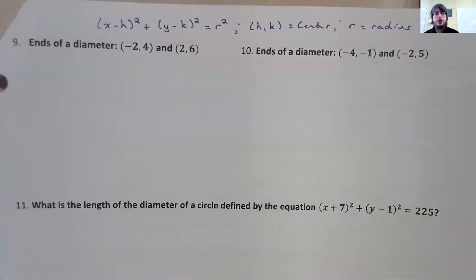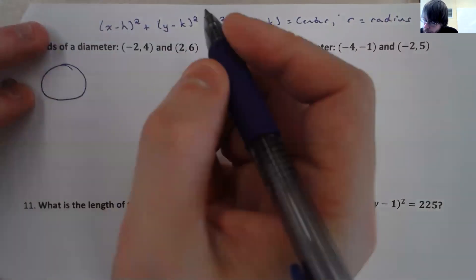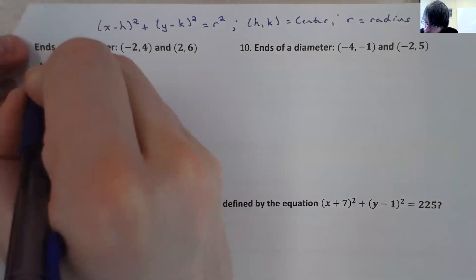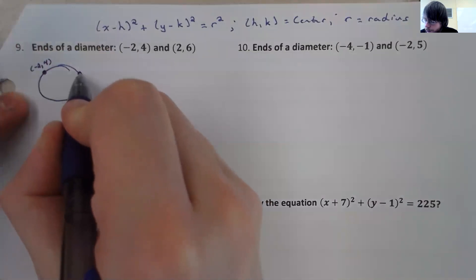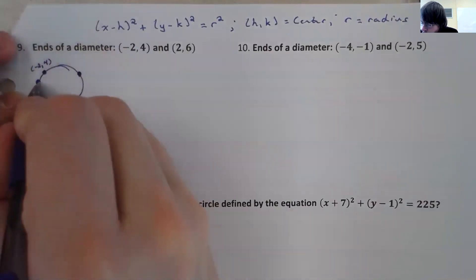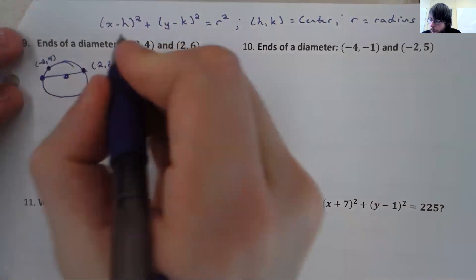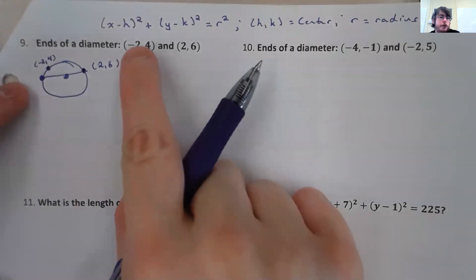You'll notice here that all it gives us is two points that are the endpoints of a diameter. Remember that for your diameter, the midpoint of the diameter is always the center. So in order to find the center of this circle, we need to find the midpoint of these two points.